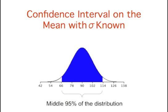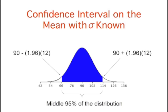The sampling distribution is shown here. The shaded area represents the middle 95% of the distribution and stretches from 66.52 to 113.48. These limits were computed by adding and subtracting 1.96 standard deviations from the mean of 90. Specifically: 90 minus 1.96 times the standard error of 12 equals 66.52, and 90 plus 1.96 times 12 equals 113.48. The value of 1.96 is used because 95% of the area of a normal distribution is within 1.96 standard deviations of the mean.